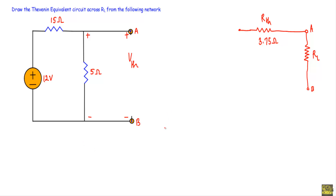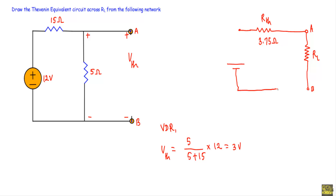Using the voltage divider rule: Vth = (5 / (5 + 15)) × 12 = 3 volts. Since Vth is positive, the positive terminal of Vth points upward and the negative terminal points downward. With Vth = 3V and Rth = 3.75Ω, this gives us our Thevenin equivalent circuit.